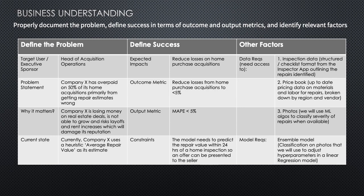Defining success: the expected impact is reducing losses on home purchase acquisitions. A good outcome metric for the Head of Acquisition Operations is reducing losses from home purchases to under 5% — currently it's 50%. The output metric for the model is MAPE, and we're targeting under 5%, as it's easy to understand in percentage terms. A key constraint: the model must predict repair values within 24 hours of a home inspection so we can deliver the offer to the seller in time.